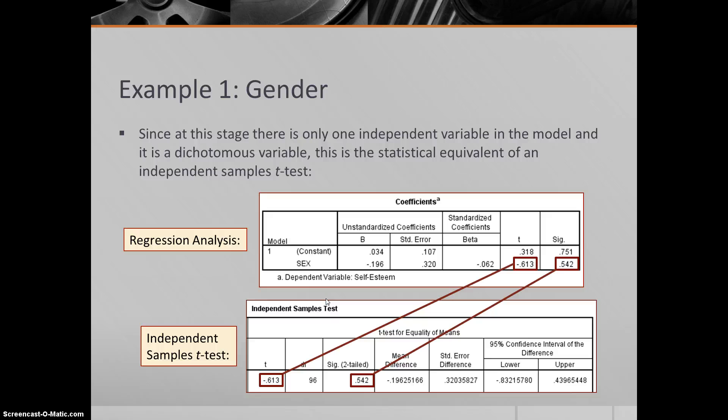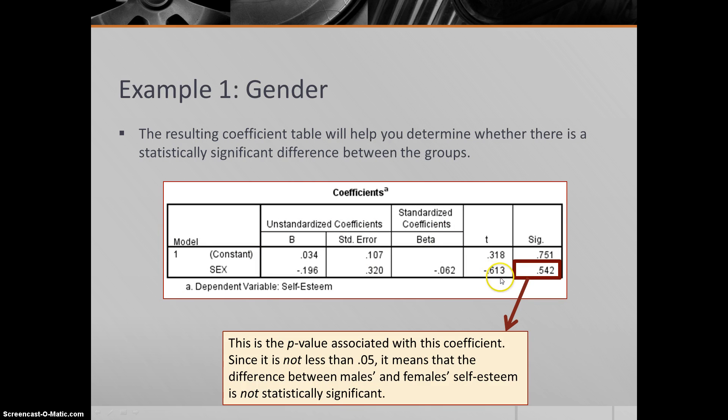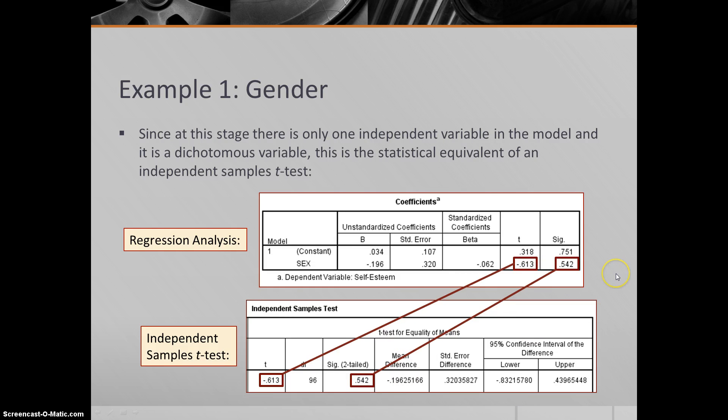I should point out that at this stage, there's only one independent variable in the model, and it's a dichotomous variable. There's only one predictor here, and it's just male or female. This is the statistical equivalent of an independent samples t-test. To prove it to you, I ran an independent samples t-test right here, and take a look. The t-statistic, negative 0.613, negative 0.613. This is the coefficient table we were just looking at - negative 0.613. And the significance level, 0.542, 0.542. This is exactly the same as an independent samples t-test. You might think, well then why wouldn't I run an independent samples t-test? Well, keep in mind, the researcher's goal and intention was to use gender as a control variable. They wanted to start with gender and then add on some other variables. In a t-test, you're just done - you can't move on from here, it's over. Here, it's a great start. You can continue from this point and add additional variables.